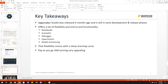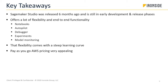For key takeaways: SageMaker Studio was released just six months ago, it's still in early development, and things are constantly changing. There's a lot of flexibility and end-to-end functionality. In my experience, the easier something is, the less flexible it might be — so this is kind of the other way: very flexible, but not always so easy to use because it's within AWS and you need to understand cloud computing. It offers notebooks, Autopilot, Debugger, Experiments, and model training — all very great tools, some pretty novel to the market. It comes with a steep learning curve and is not out-of-the-box, but the pay-as-you-go AWS pricing is very appealing for organizations that just want to try it out without committing to a multi-year agreement.